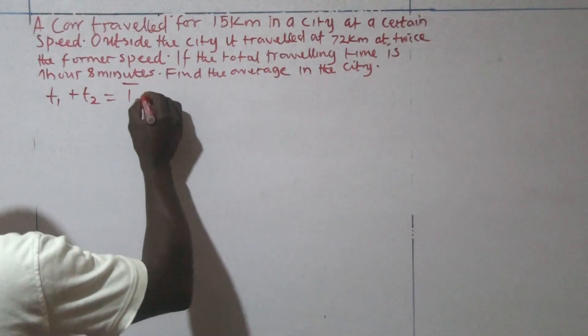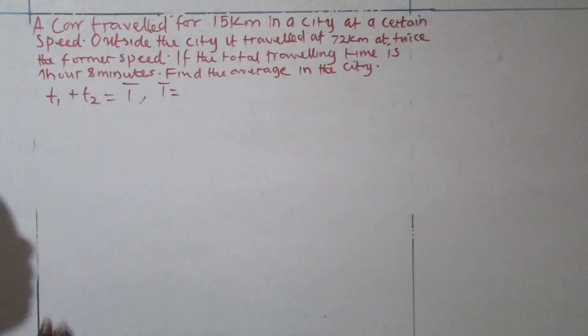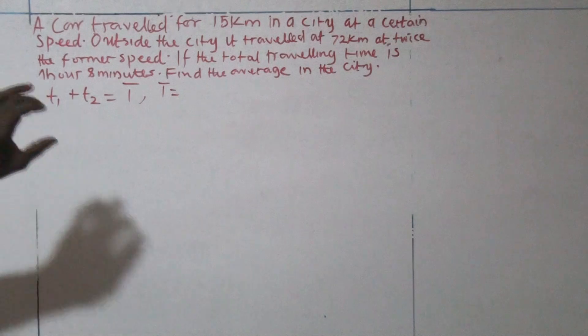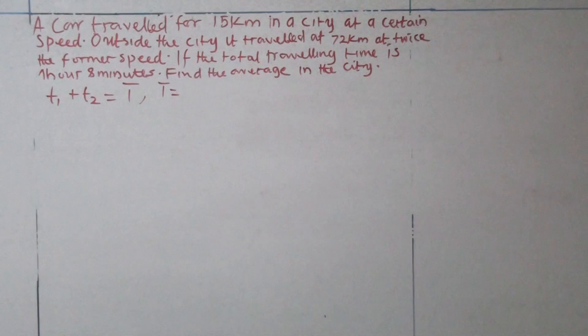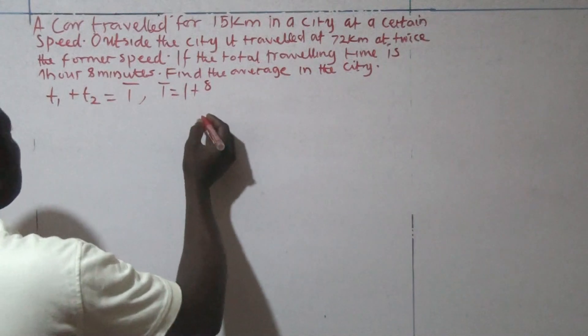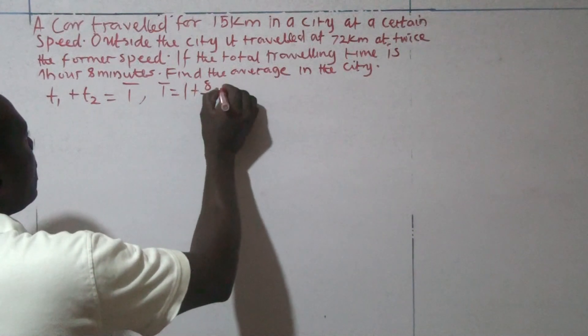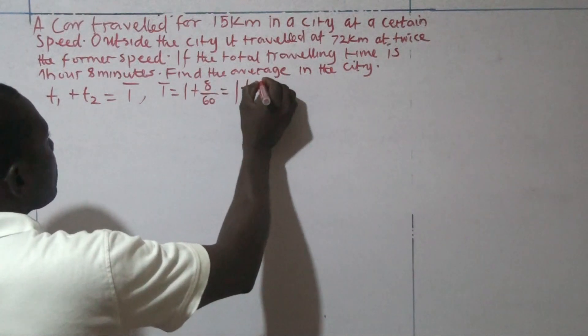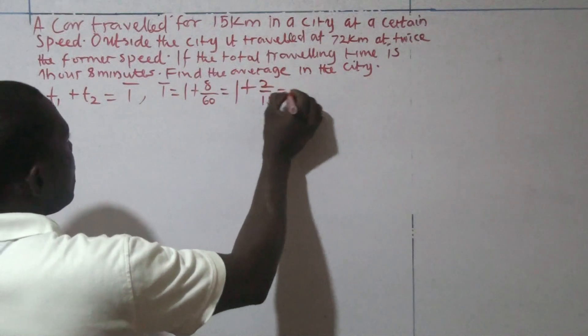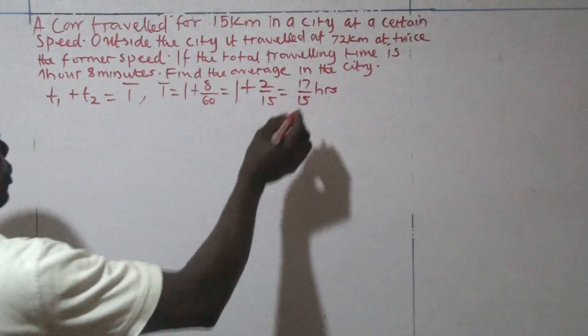Then we know that the total time is one hour eight minutes, and we need to convert this eight minutes to hours, because in speed, kilometers always move with an hour. So here, this becomes one hour plus eight, to convert from minutes to hours, multiplied by one over 60, which becomes one plus two over 15, and this virtually becomes 17 over 15. That is for the total time.